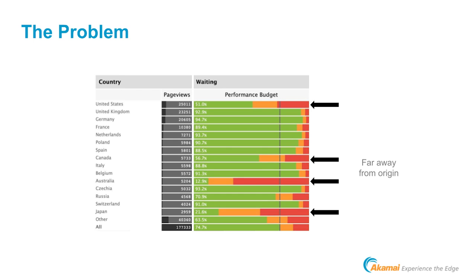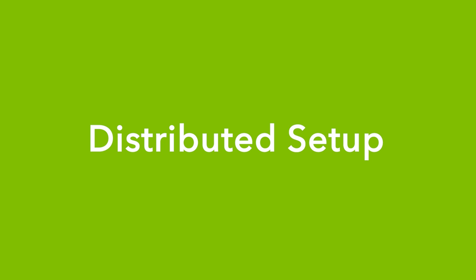I tried everything on Akamai — all best practices in place, persistent connections — but for these distant countries I still had a problem. If you can't bring the users closer to your origin, you can bring the origin closer to your users.